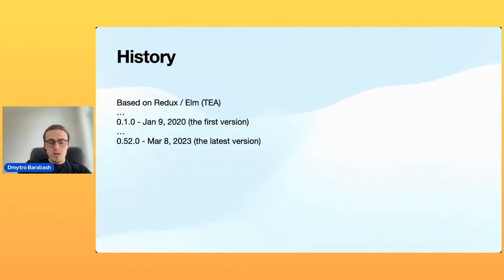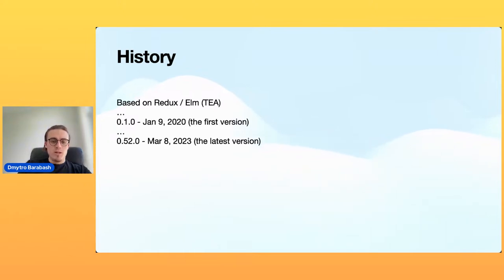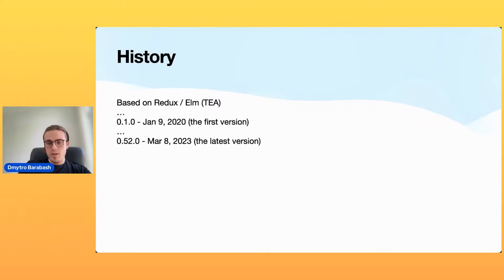Let's start from the history. There are two main authors of this architecture in the iOS community: Stefan Celis and Brandon Williams. For the last six years they have presented many functional topics for the iOS community, some of which are available on YouTube. SwiftUI was released in 2019, giving us a declarative way of UI creation in iOS. Since then, stateful architecture was not clearly specified and unidirectional architectures became more and more popular. The first TCA version 0.4.0 was released on January 9, 2020, and the latest TCA version is 0.52.0 released on March 8, 2023 — so it's already more than three years of TCA.